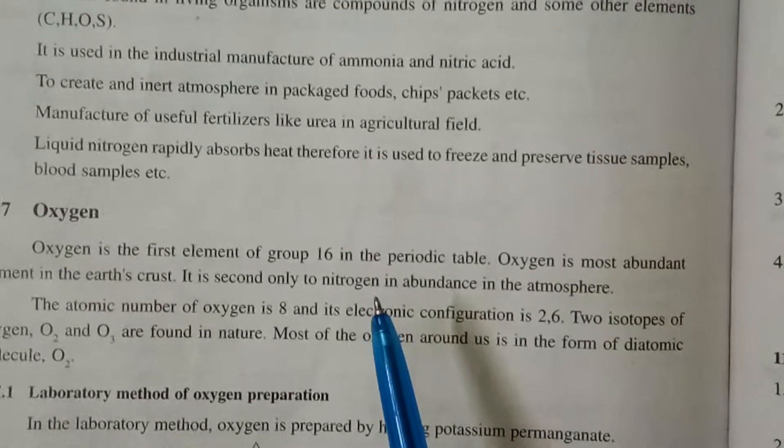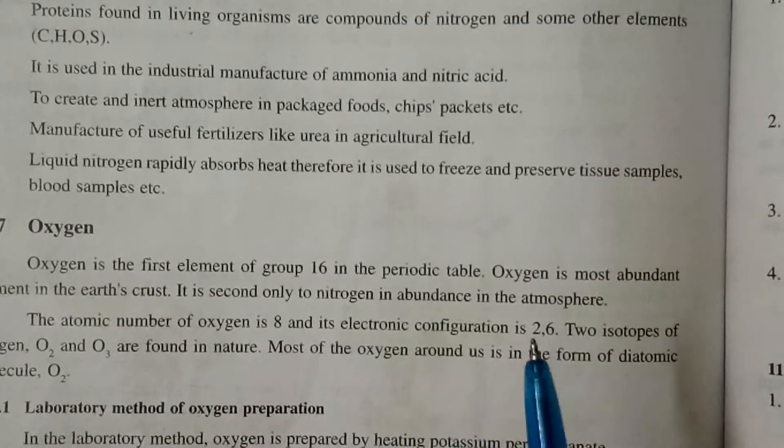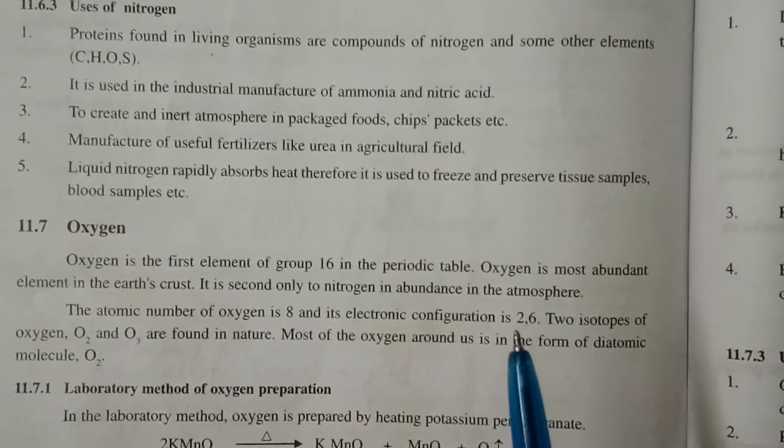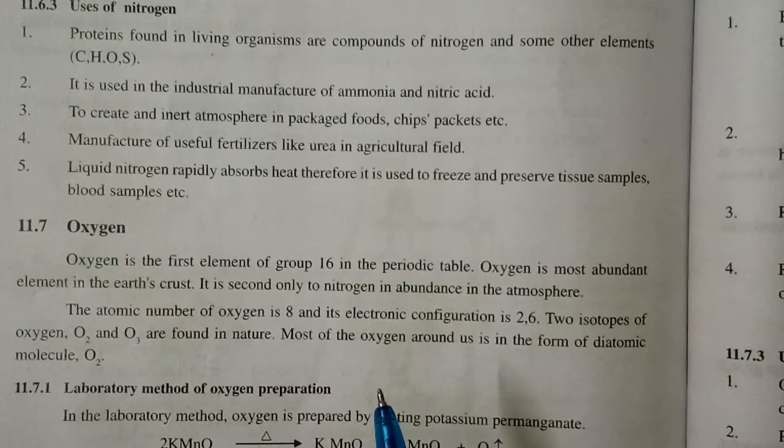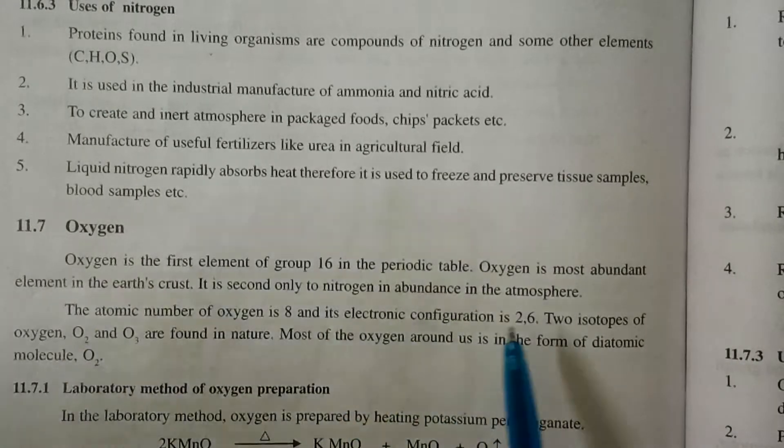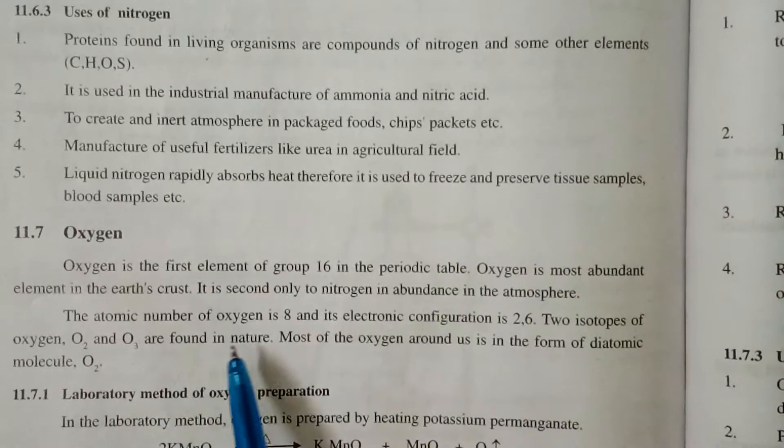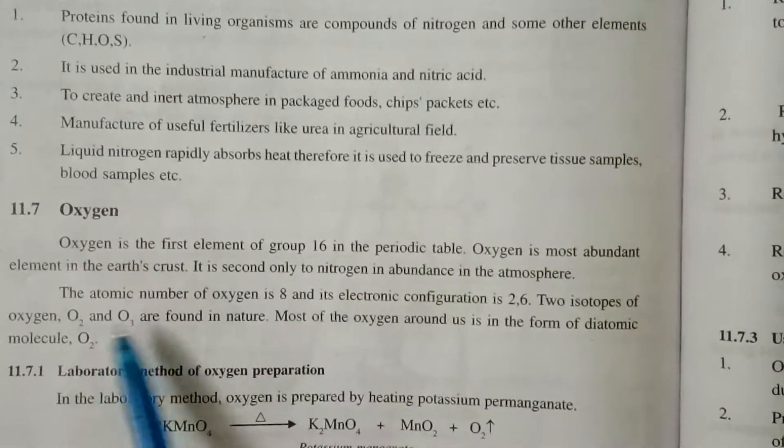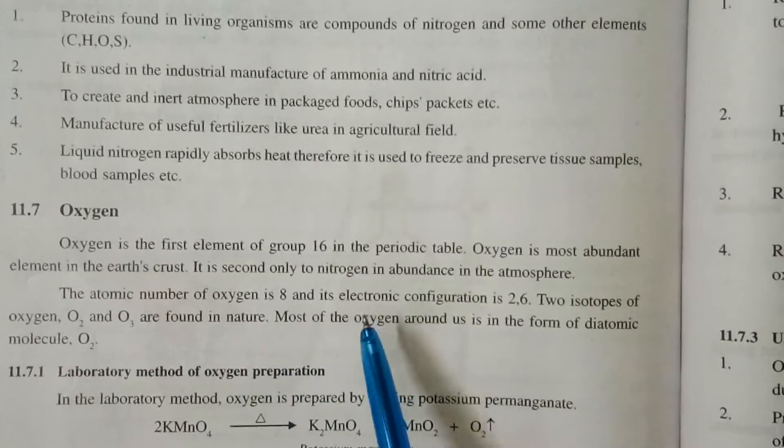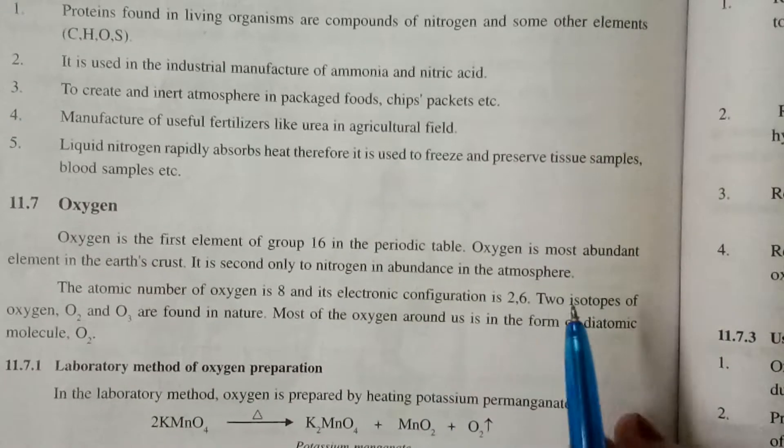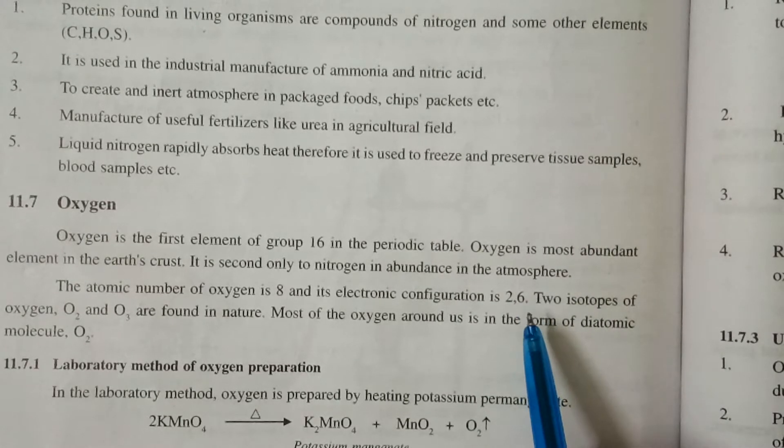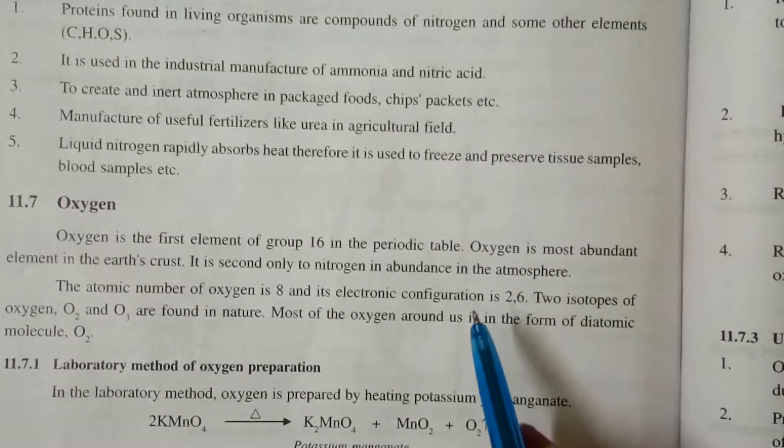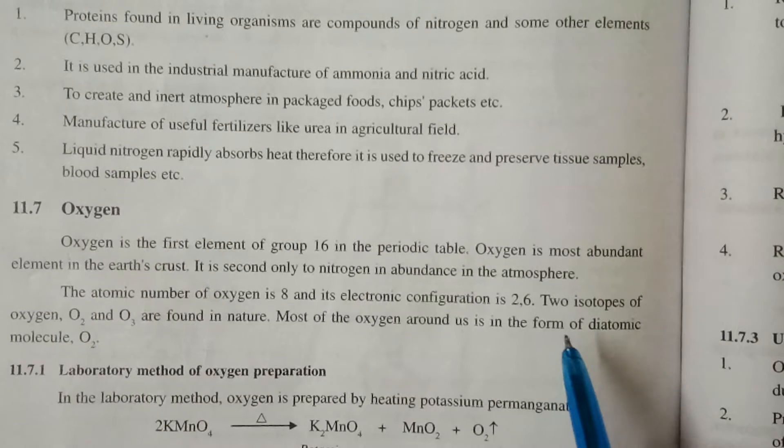You know that nitrogen is 78% in the atmosphere and oxygen is 21%. The atomic number of oxygen is 8, and its electronic configuration is 2, 6. It means in first orbit of oxygen atom there are 2 electrons and in second orbit there are 6 electrons.